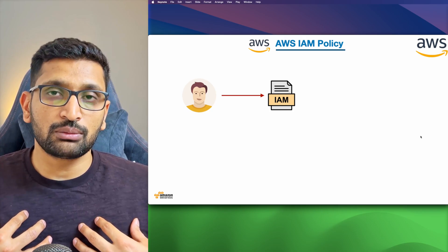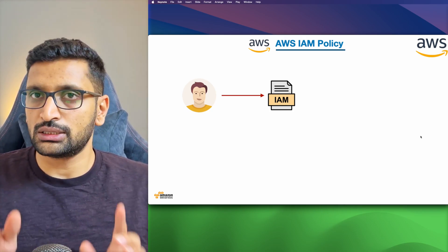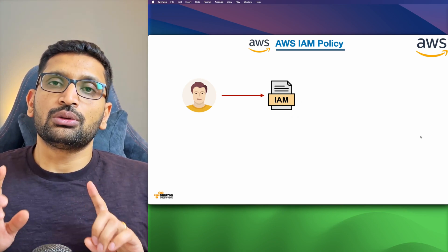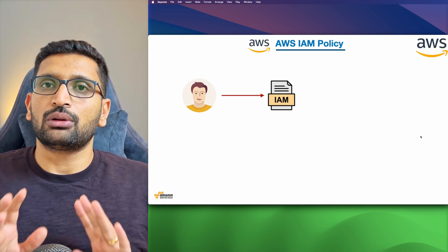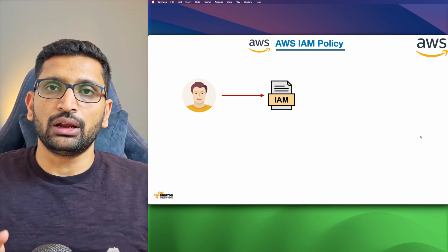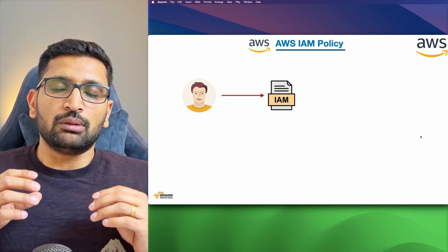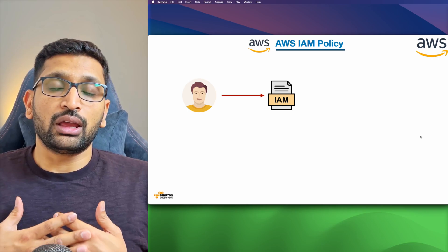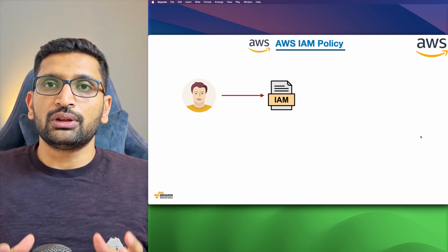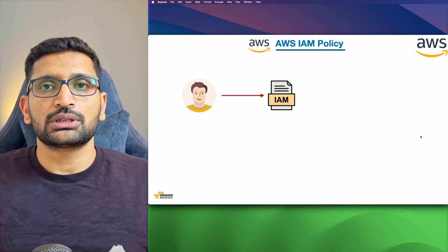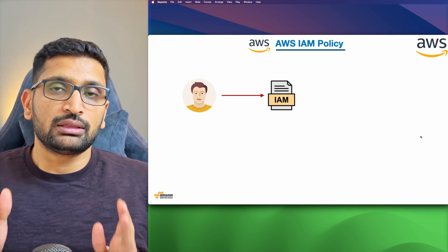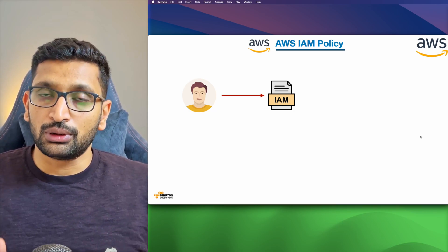I am an AWS user but not a root user. That's the first scenario you should keep in mind, because a root user has permission to use all the services. I am just a normal AWS user present inside my AWS account. By default, I don't have any permission to use any services. So we need to create a permission document, and that permission document is called an IAM policy document.